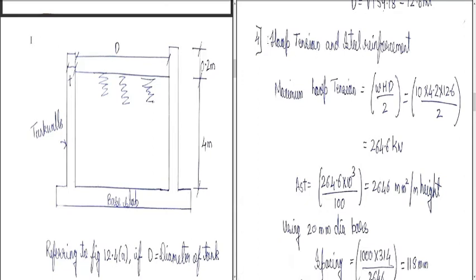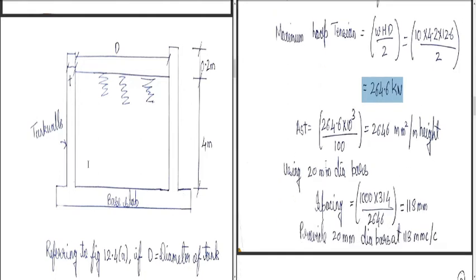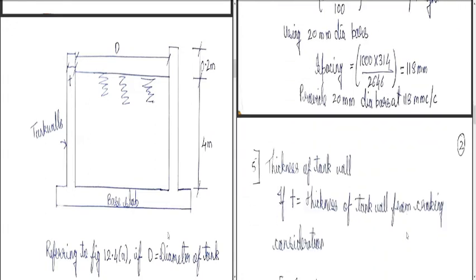Next, we calculate hoop tension and steel reinforcement. The maximum hoop tension is given by T = ω × H × D / 2, where ω = density of water = 10 kN/m³, H = 4.2 m, D = 12.6 m. So T = 10 × 4.2 × 12.6 / 2 = 264.6 kN/m. Area of steel Ast = 264.6 × 10³ / 100 = 2646 mm²/m height. Using 20 mm diameter bars, spacing = 1000 × 314 / 2646 = 118 mm. Provide 20 mm diameter bars at 118 mm centre-to-centre.